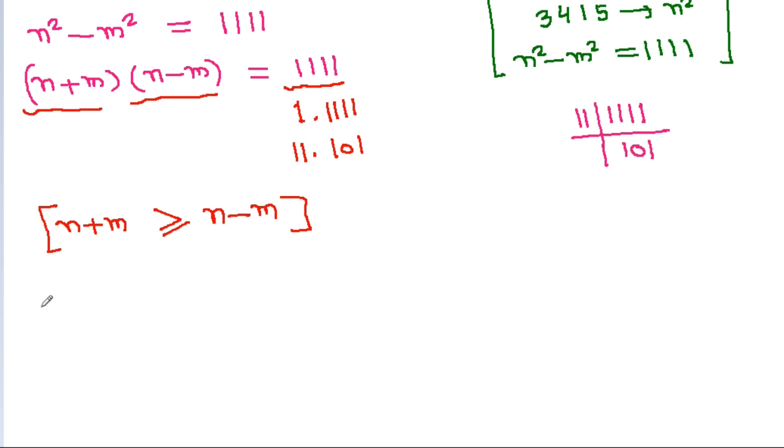So case 1, if N plus M is equal to 1111 and N minus M is equal to 1.